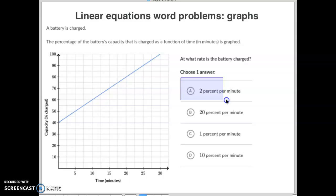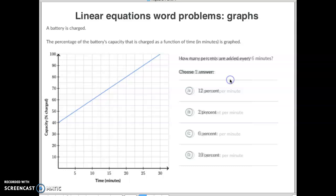So you'll notice right here, letter A would be the answer we would choose. At what rate was the battery charged? 2% per minute. What if the question is different? What if the question was how many percent are added every six minutes? Well, if it goes up 2% in each minute, then in six minutes it would go up 12%, and that would be your answer. So that's kind of how we do that.